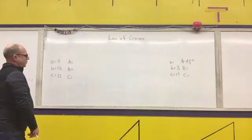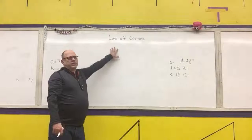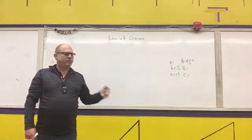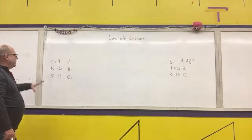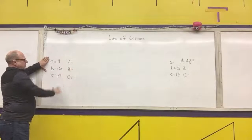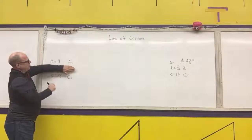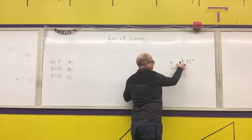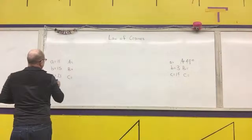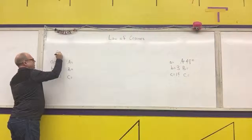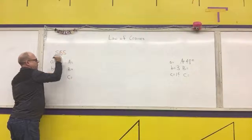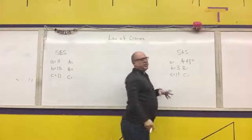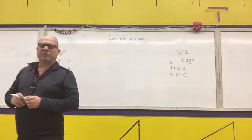Our next lesson covers the law of cosines. The law of cosines is used if you have an oblique triangle, which means it's obtuse or acute. In both possible setups, you can't solve a set of proportions because you don't have two matching pieces. You use the law of cosines if they give you three sides of a triangle, or two sides and the included angle. Those are the two cases.